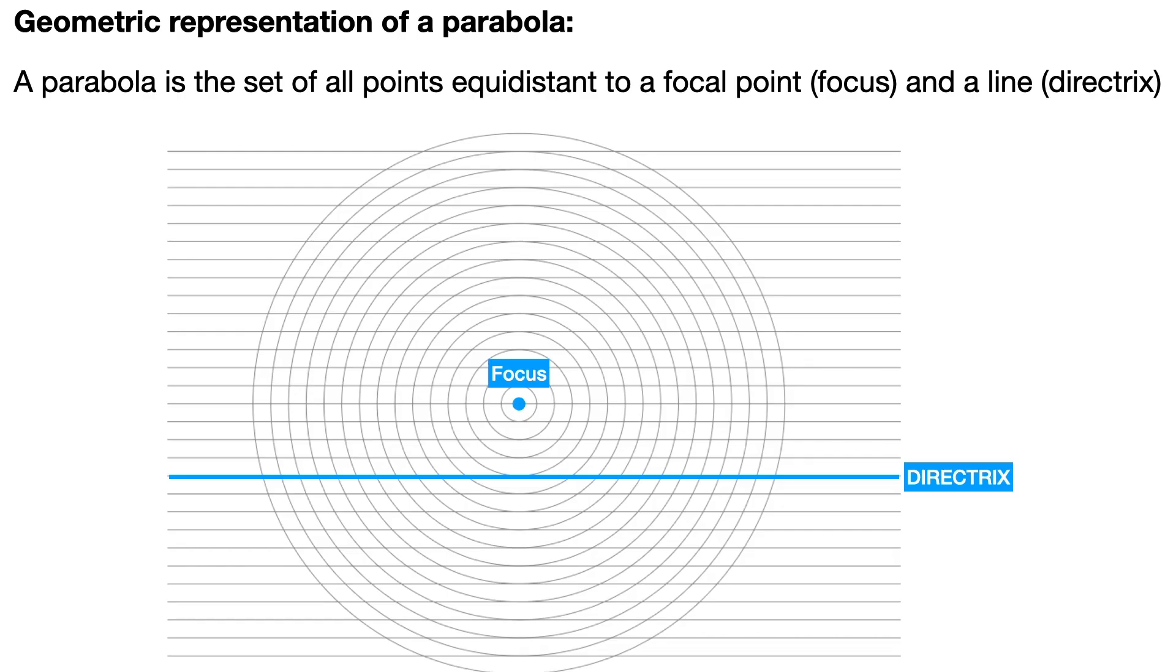This is the focus-directrix definition of a parabola. A parabola is the set of all points equidistant to a focal point, which is also known as a focus, and a line which is called the directrix.